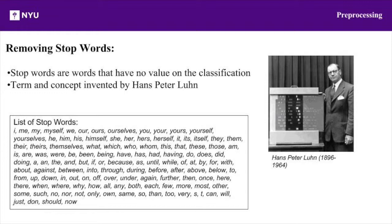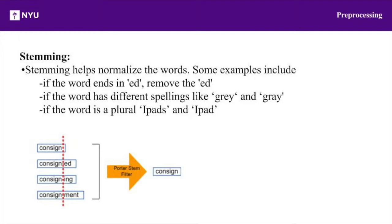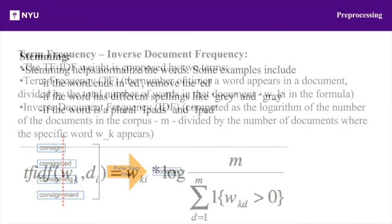First, we have to go through each synopsis and remove stop words. Hans-Peter Lund, one of the pioneers in information retrieval, coined the concept of stop words — words that don't necessarily add any valuable information to your retrieval process, and therefore are often removed in projects like ours. We can't stop at just stop words, because our dataset also needs some normalization. To do this, we use stemming. Stemming helps normalize the words — for example, if the word ends in 'ed' or 'ing,' we remove those endings. If a word has a different spelling, such as American and British variants, or if the word is plural, those are all normalized and stemmed down.